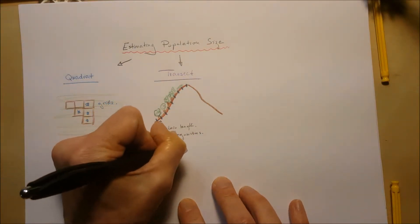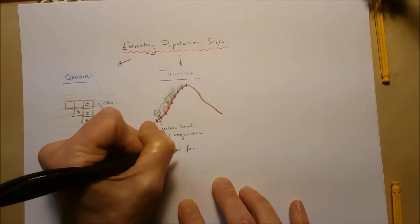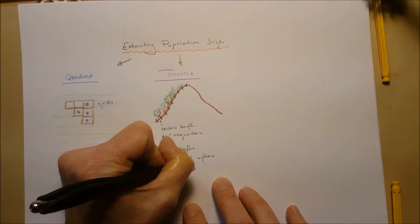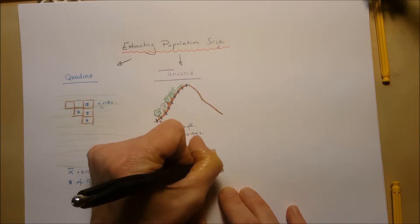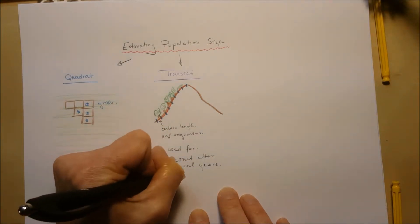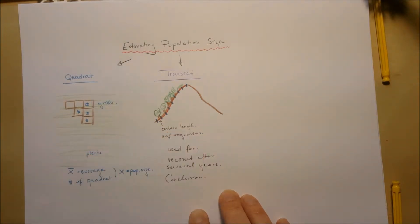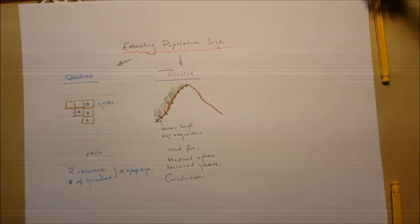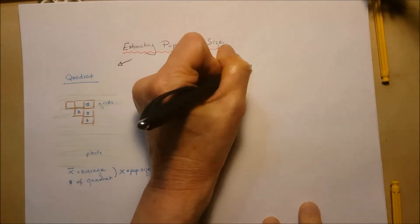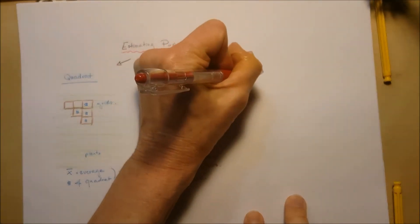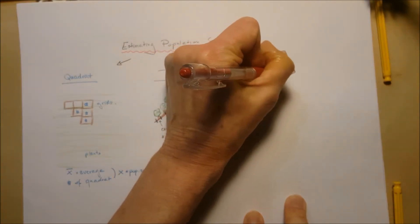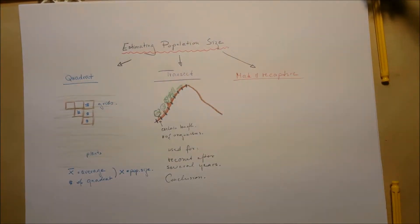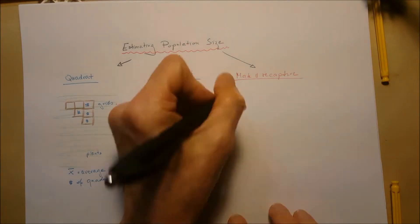We can use it to recount over a period of time the number of species, draw conclusions, or compare different mountains with their transect and their population. The last method is the mark and recapture method.